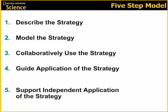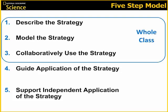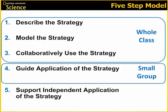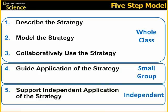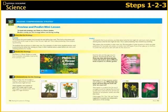The five-step model is a gradual release model. The first three steps are meant to be delivered in a whole group setting. Step 4 is meant to be small group instruction using the Become an Expert books. And step 5 is meant for independent practice using the Explore on Your Own books. There is a two-page mini lesson to teach each strategy using one of the Become an Expert books. Each mini lesson takes you through steps one, two, and three of the five-step model.